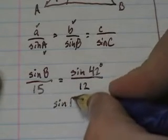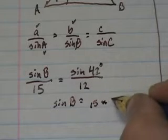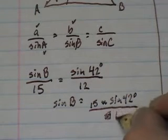And now if I take that information and I multiply, I get sine of B equals 15 times sine of 42 divided by 12.